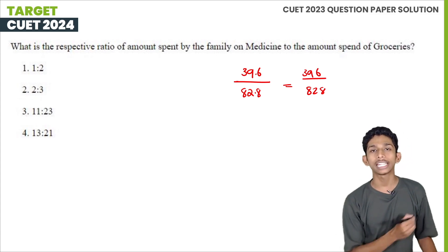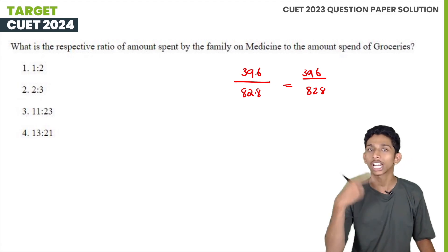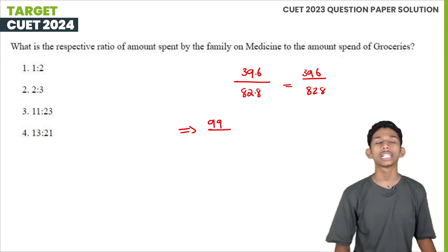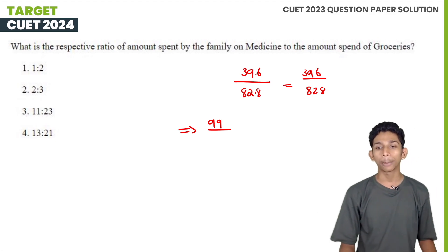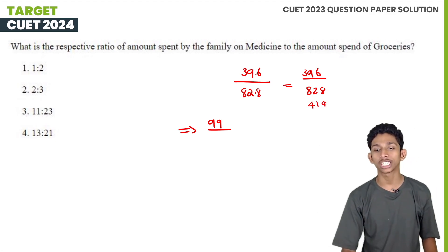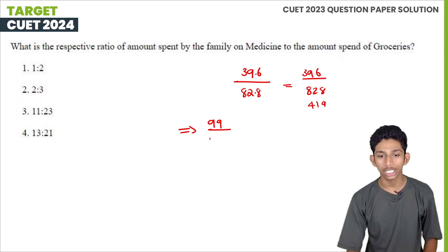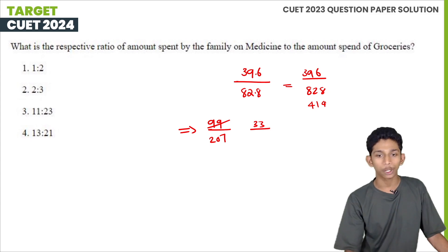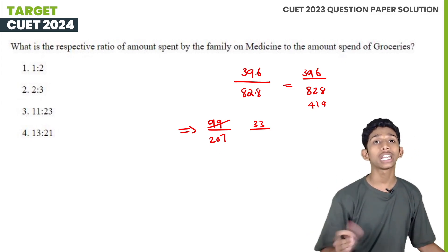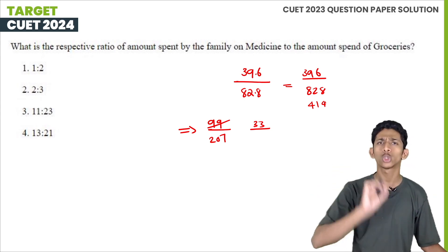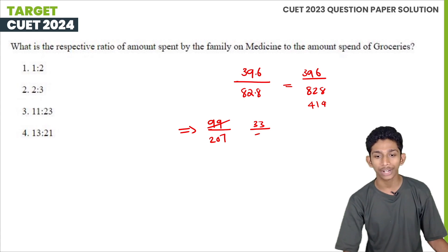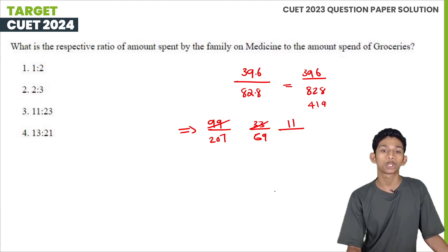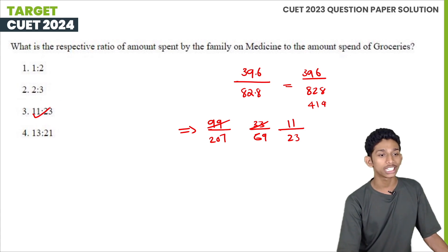The ratio will be 39.6 to 82.8. Simplifying: 400 divided by 414, then further reduced. 200 divided by 414 gives us 27. Dividing by 3 we get 200 divided by 315. That gives us 11, then 300 divided by 23. So we write the final simplified ratio.